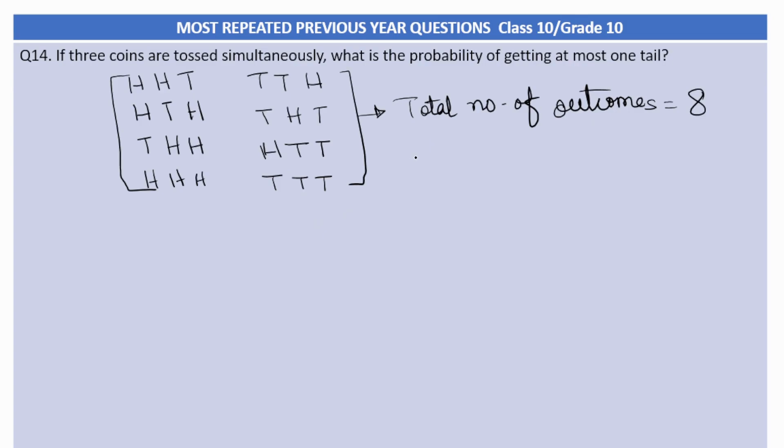Now favorable outcomes. Obviously it will not have all the 8. It will have head, head, head. Why? Because at most one tail, so no tail also is one of the favorable outcomes. Then it could be head, head, tail, or it could be HTH, tail in the middle, or it could be tail in the beginning, tail, head, head. So these are the four favorable outcomes.